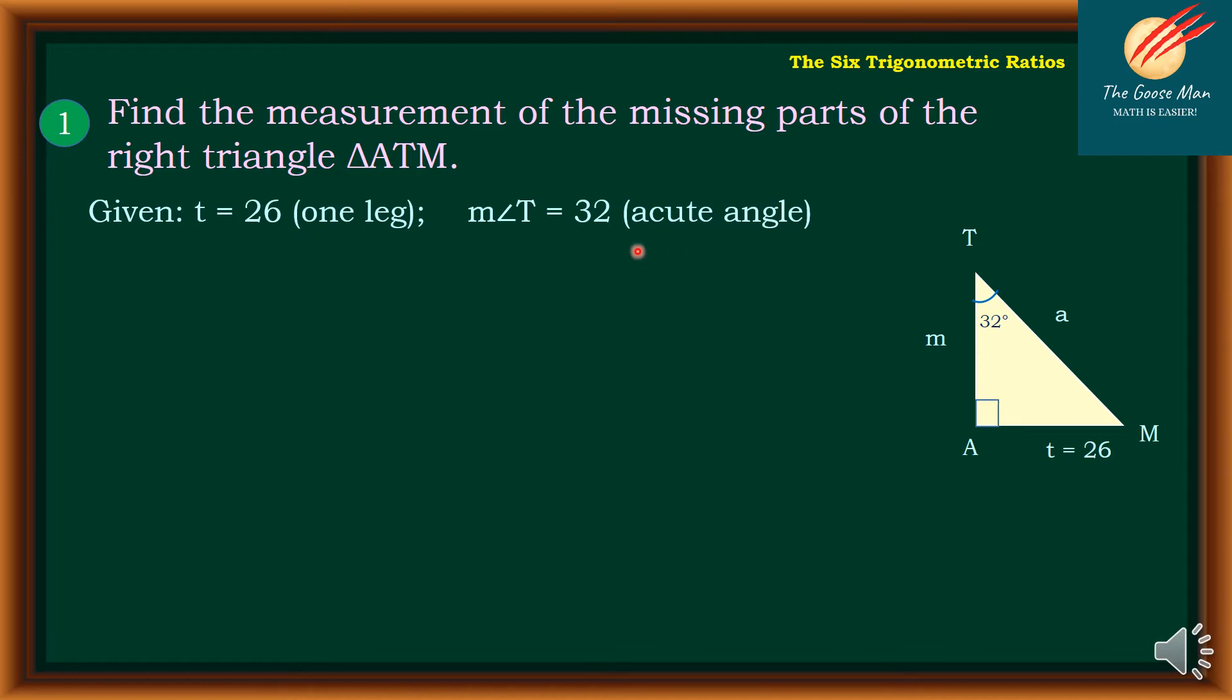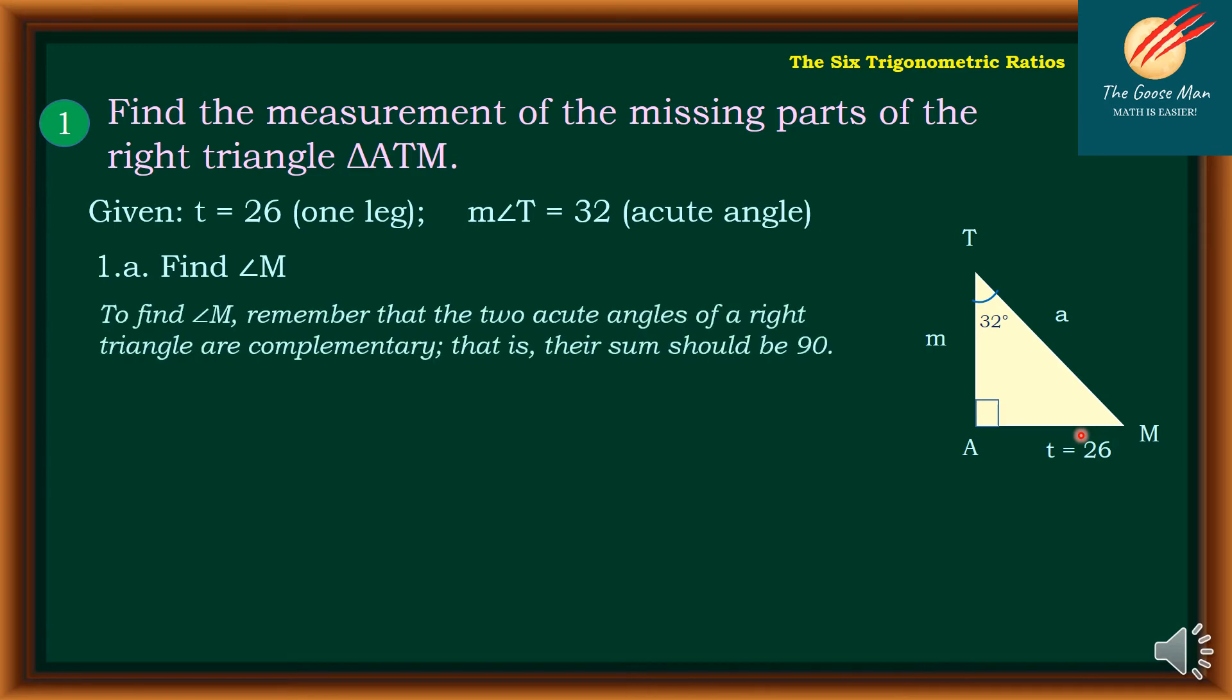In order to find the measure of angle M, remember that angle T plus angle M equals 90 degrees because they are complementary angles. If I subtract both sides of the equation by the measure of angle T, I have measure of angle M equals 90 minus the measure of angle T.